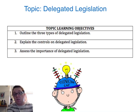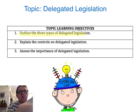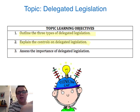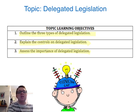Welcome to the topic Delegated Legislation. There are three topic learning objectives which you need to be aware of. The first is to outline the three types of delegated legislation. The second is to be able to explain the controls on delegated legislation. And thirdly, to assess the importance of delegated legislation, which is the analytical and evaluative piece. For this video we're just going to concentrate on the first learning objective: the three different types.